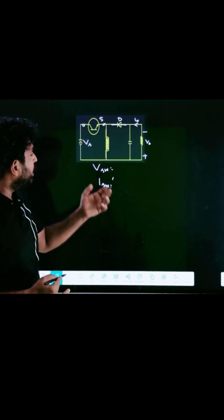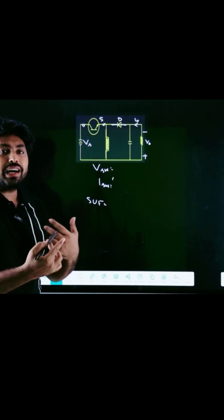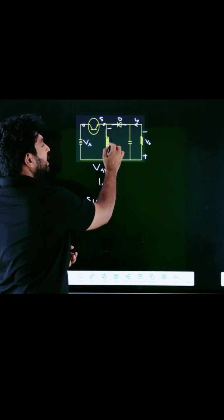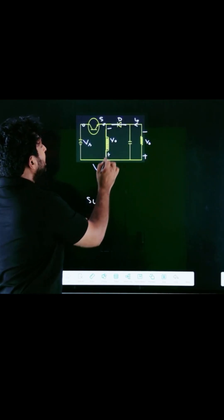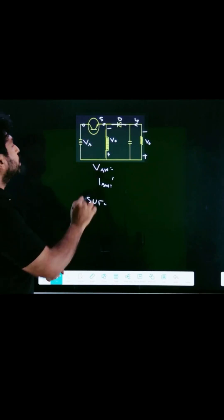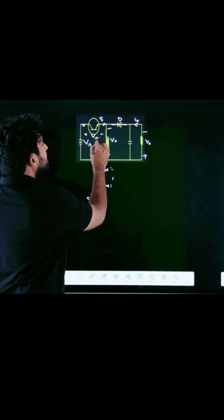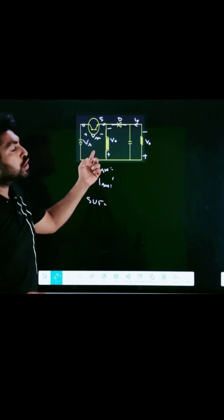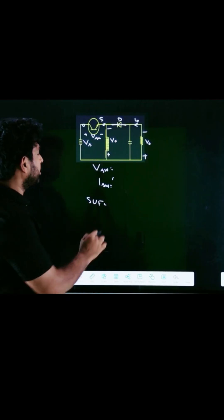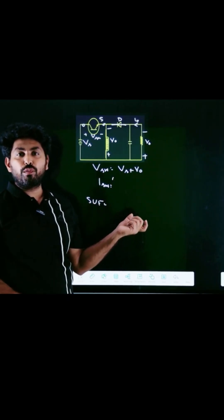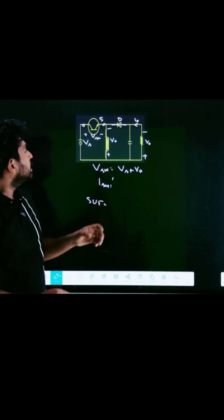During that condition, the same output voltage will appear across the switch. If I apply KVL, the voltage across the switch VSW will be the summation of VS plus V0, so VSW equals VS plus V0.